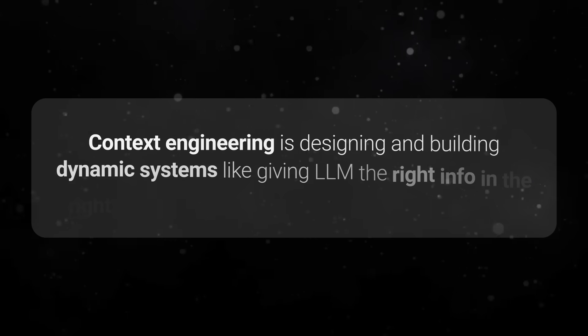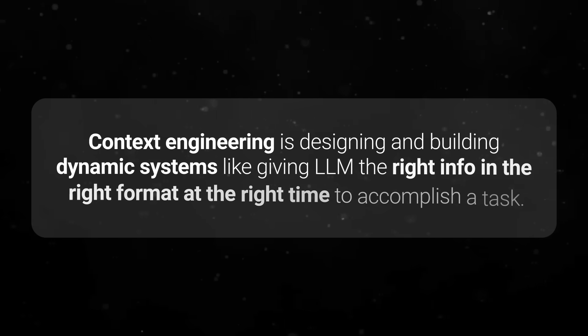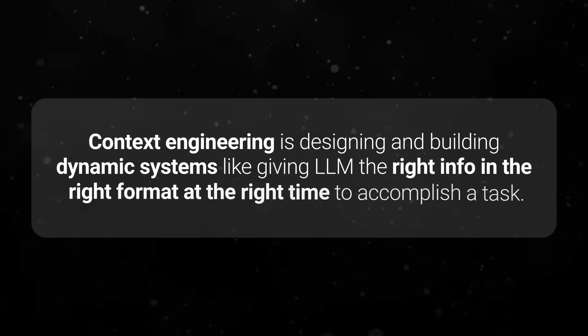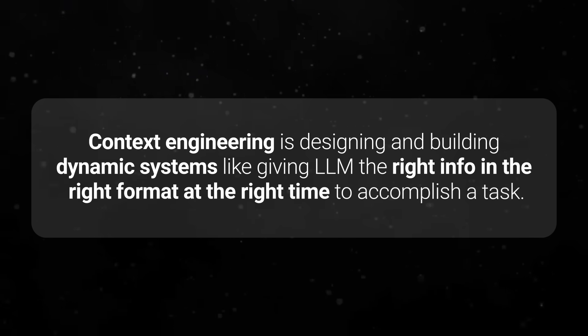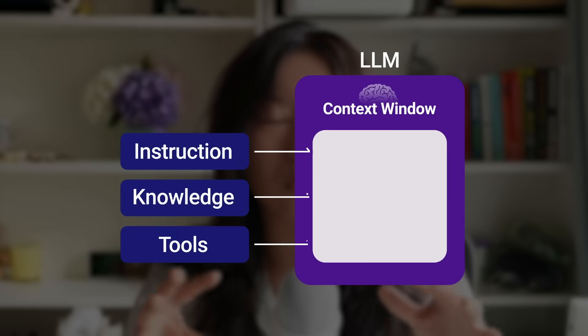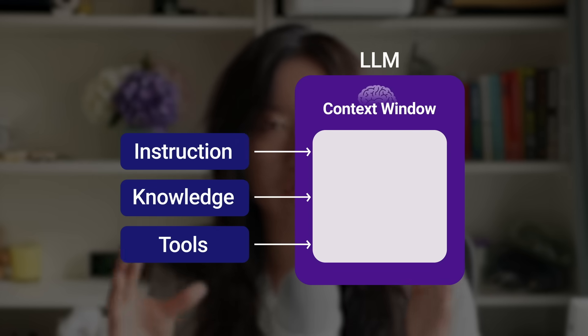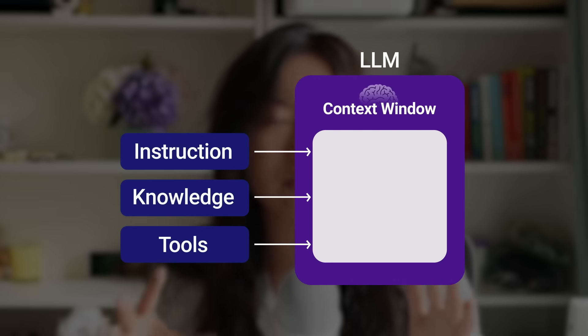A portion of this video is sponsored by Augment Code. Let's first define context engineering. Context engineering is designing and building dynamic systems that give an LLM the right info in the right format at the right time to accomplish a task. In other words, you're packing the context window, which is the input area of a large language model, just right.